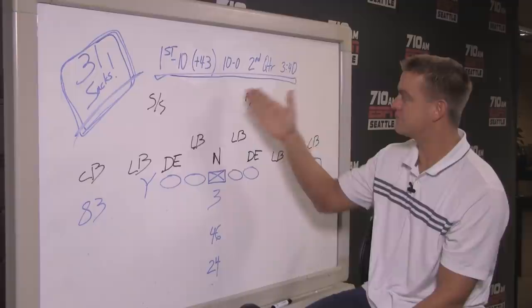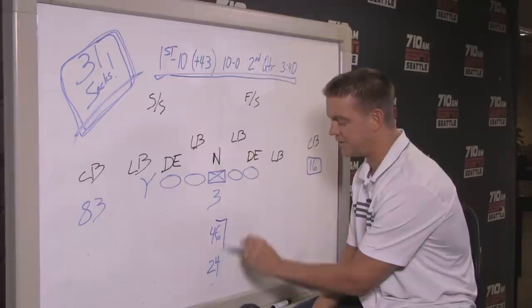But through the first 25 minutes of this game, the running game was going, and it was going with their two-back personnel, their 21 personnel, two-back, one tight end.